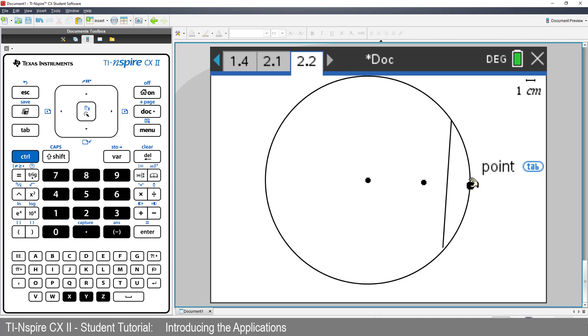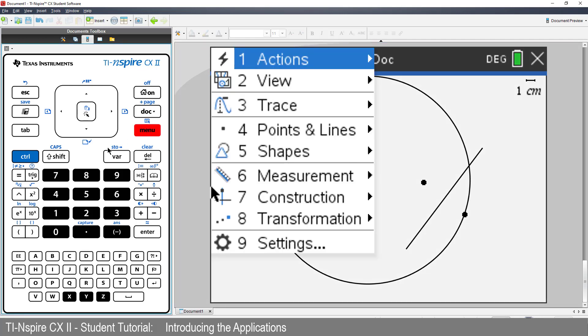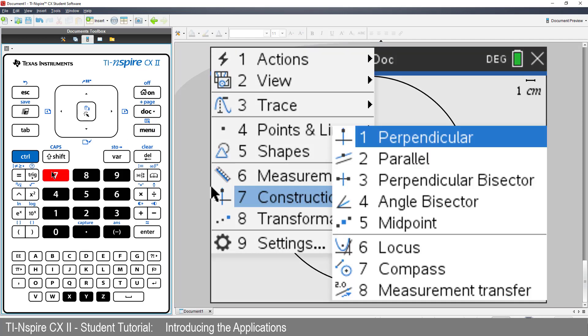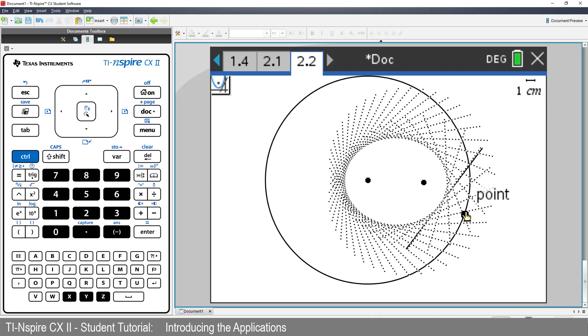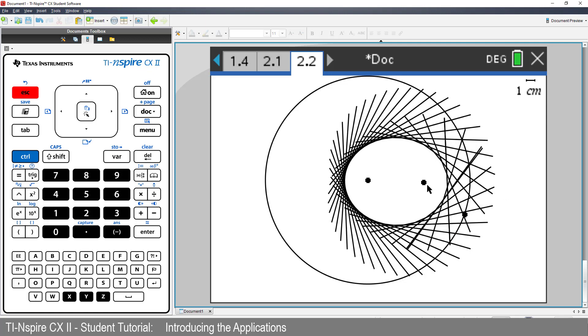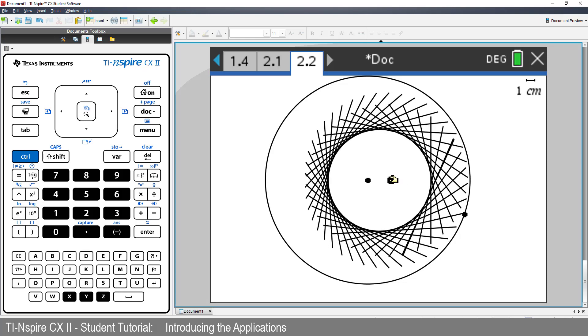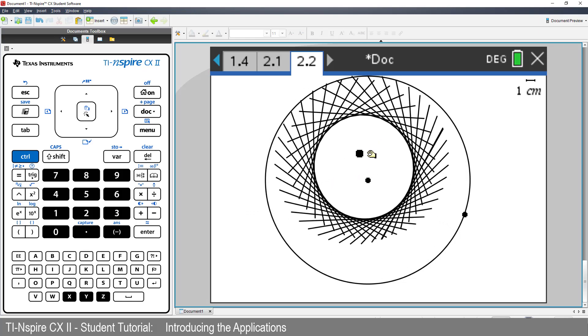If I drag the point on the circle around, the perpendicular bisector follows. Just like the graphs and lists and spreadsheets and notes, this environment is dynamic. Suppose I want to create a record of where the Perpendicular Bisector moves. Press Menu, select Construction, and choose Locus. Click the point on the circle, and then the Perpendicular Bisector. Then press Escape to release the Locus tool. Now drag the point inside the circle around. That's pretty cool.